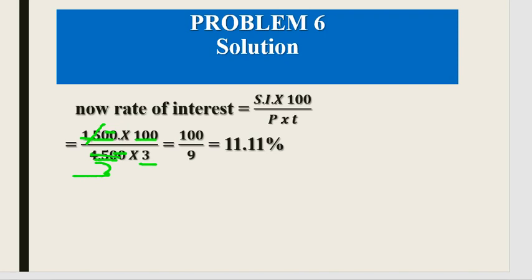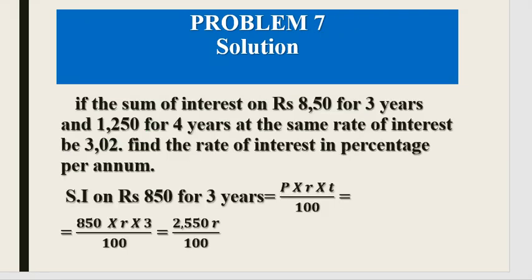Now let's see Problem 7. If the sum of simple interest on Rs. 850 for 3 years and Rs. 1,250 for 4 years at the same rate of interest is Rs. 310, find the rate of interest. We have two parts: interest on Rs. 850 for 3 years, and interest on Rs. 1,250 for 4 years, both at the same unknown rate R.